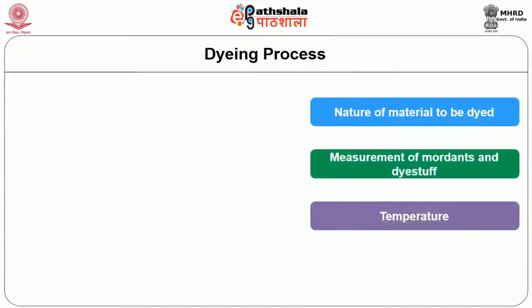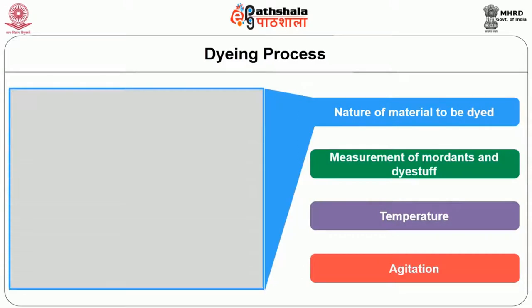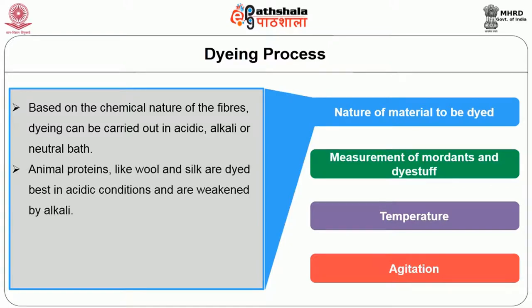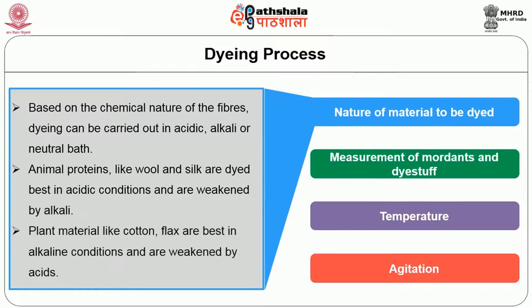Let us deal with the technique of dyeing various fibres. The main factors to be considered in natural dyeing are the nature of the material to be dyed. Based on the chemical nature of the fibres, dyeing can be carried out in acidic, alkaline or neutral bath. Animal proteins like wool and silk are dyed best in acidic conditions and are weakened by alkali. Plant material like cotton and flax are best in alkaline conditions and are weakened by acids.